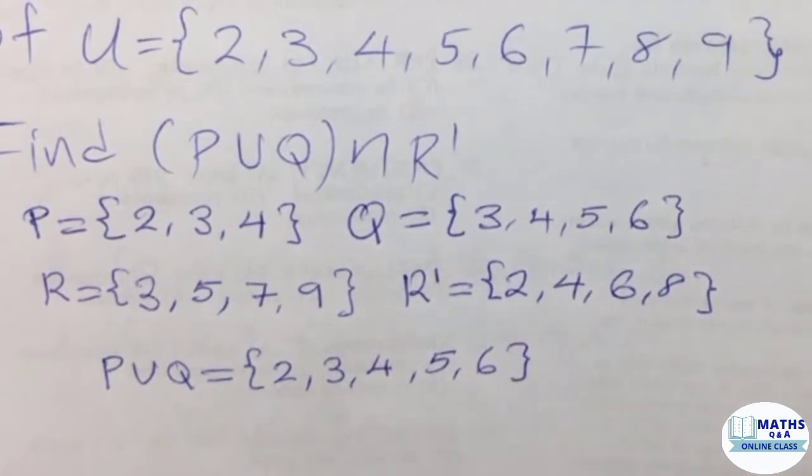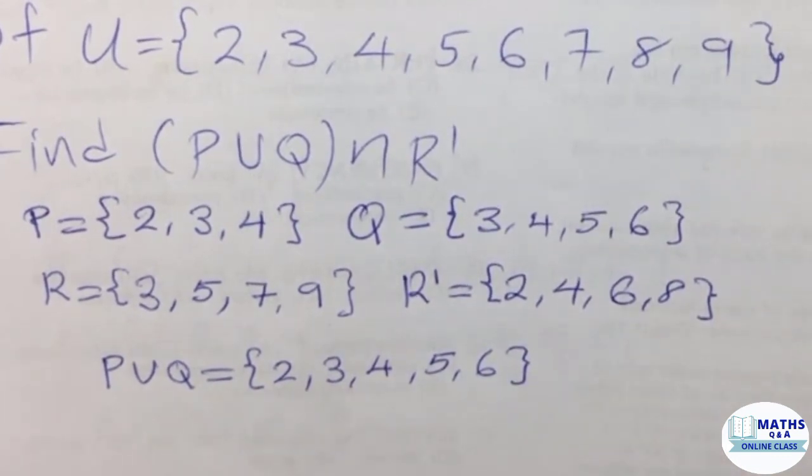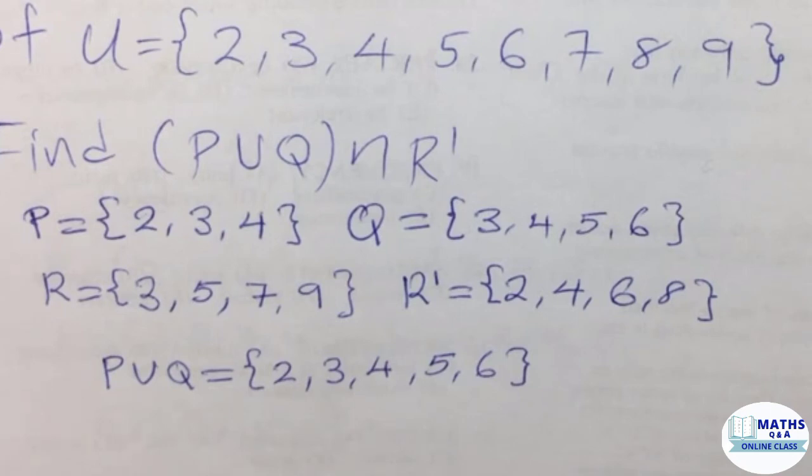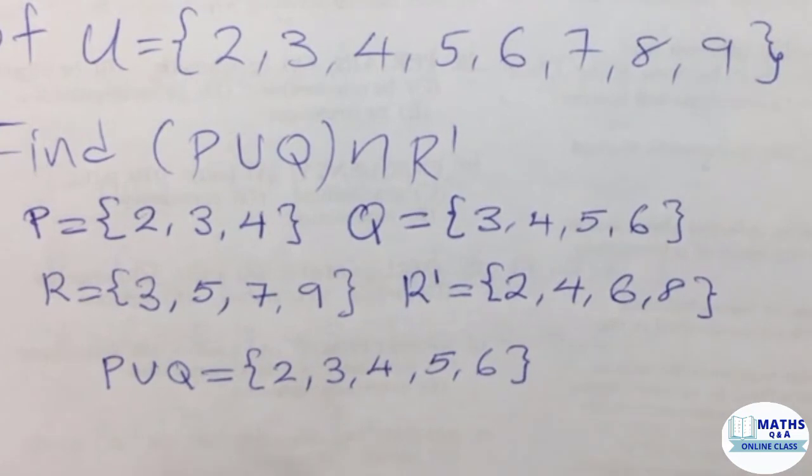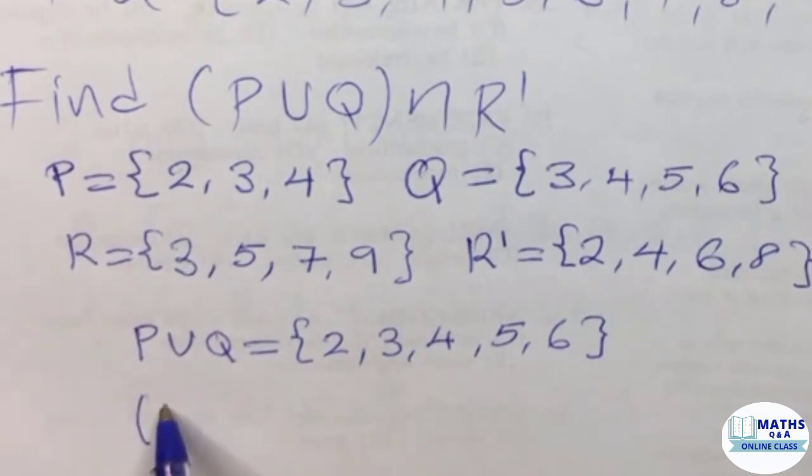The next thing is we're going to find the intersection of P union Q with R complement. The intersection means common elements in R complement and the union of P and Q. So that will give us the final answer.